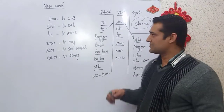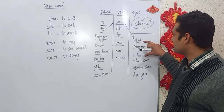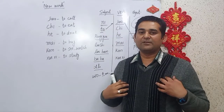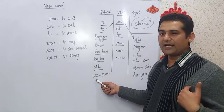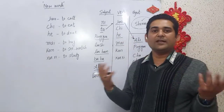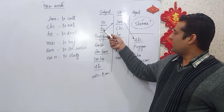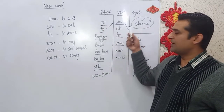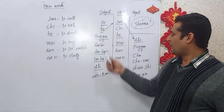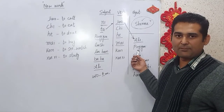Now here's how we reply. Just replace the 'shí ma' with the object. For example: ni jiao shí ma — 'you call what?' I reply: wo jiao Ali — 'I call Ali.' Ni chih shí ma — 'you eat what?' I reply: wo chih pinguo — 'I eat apple.'